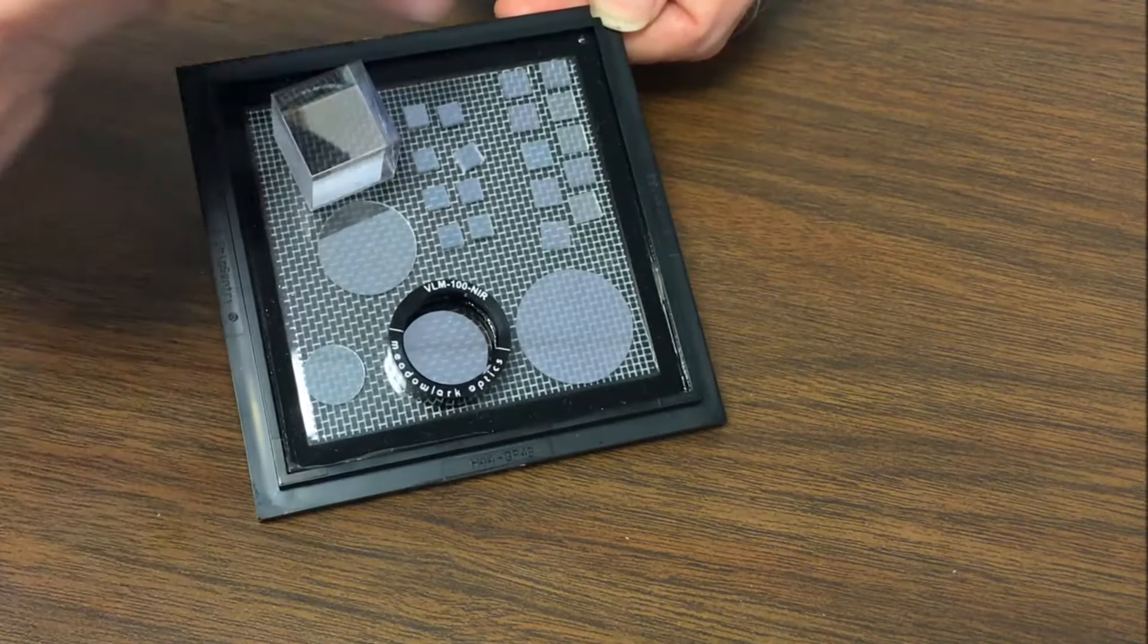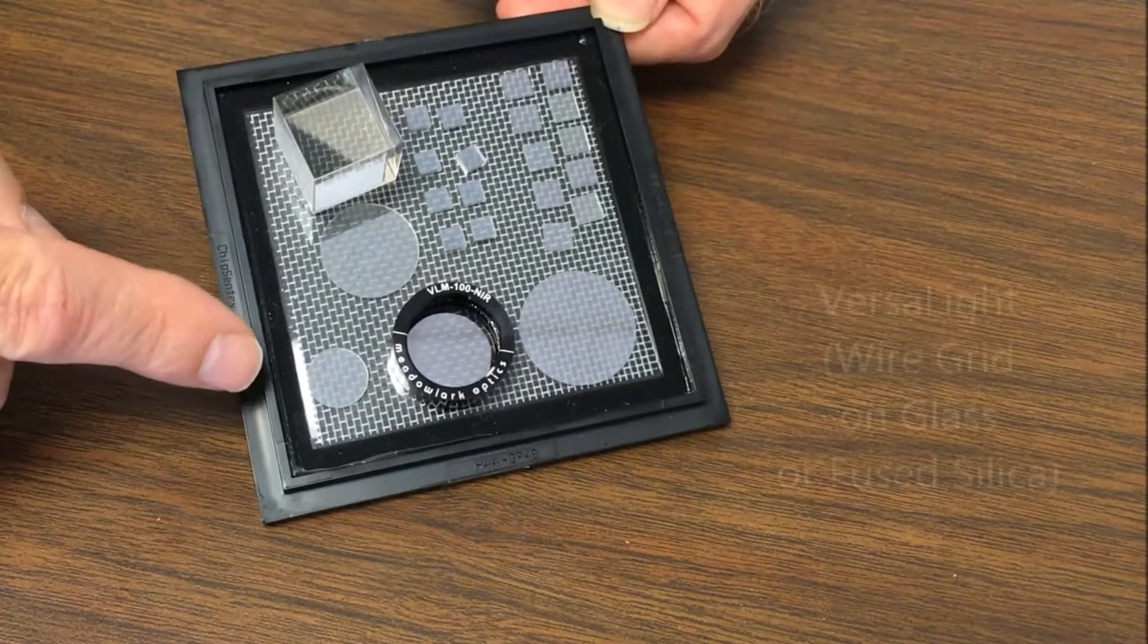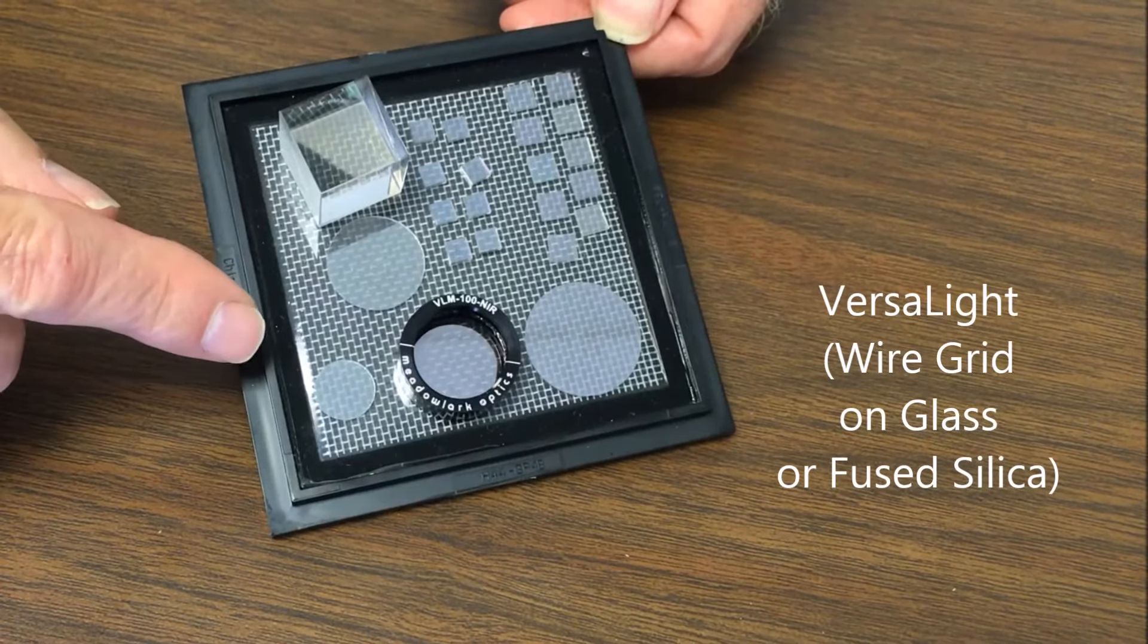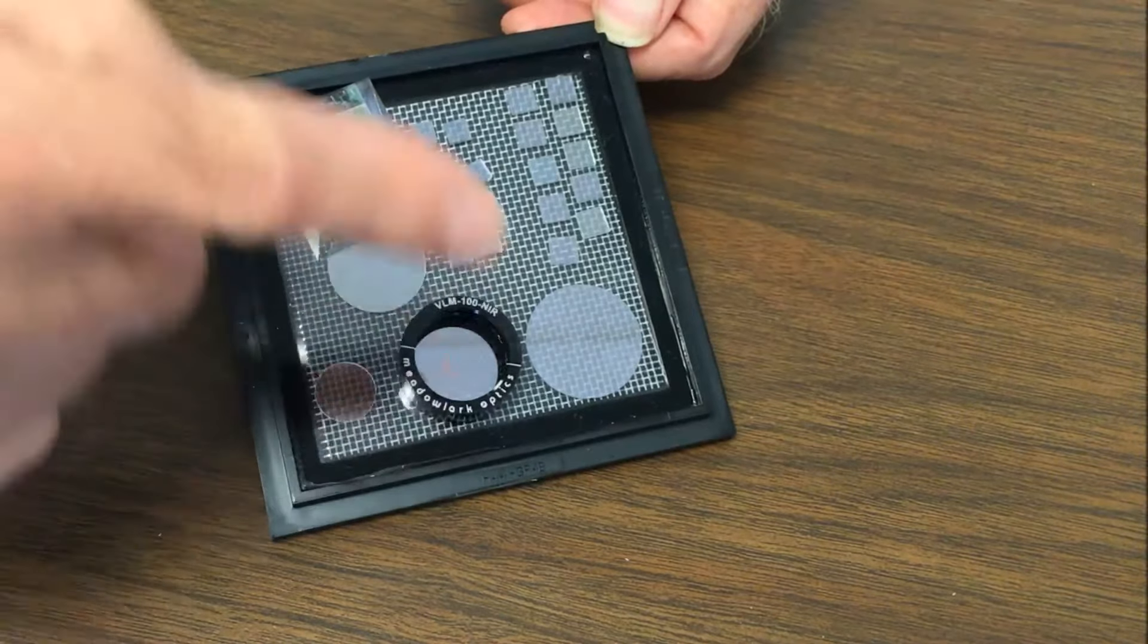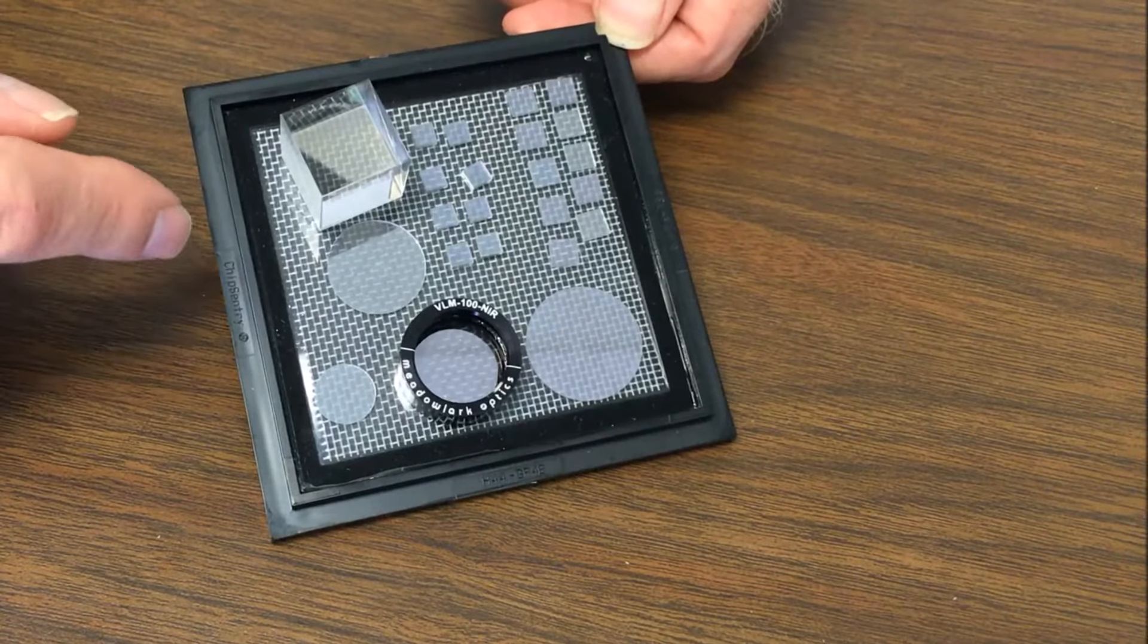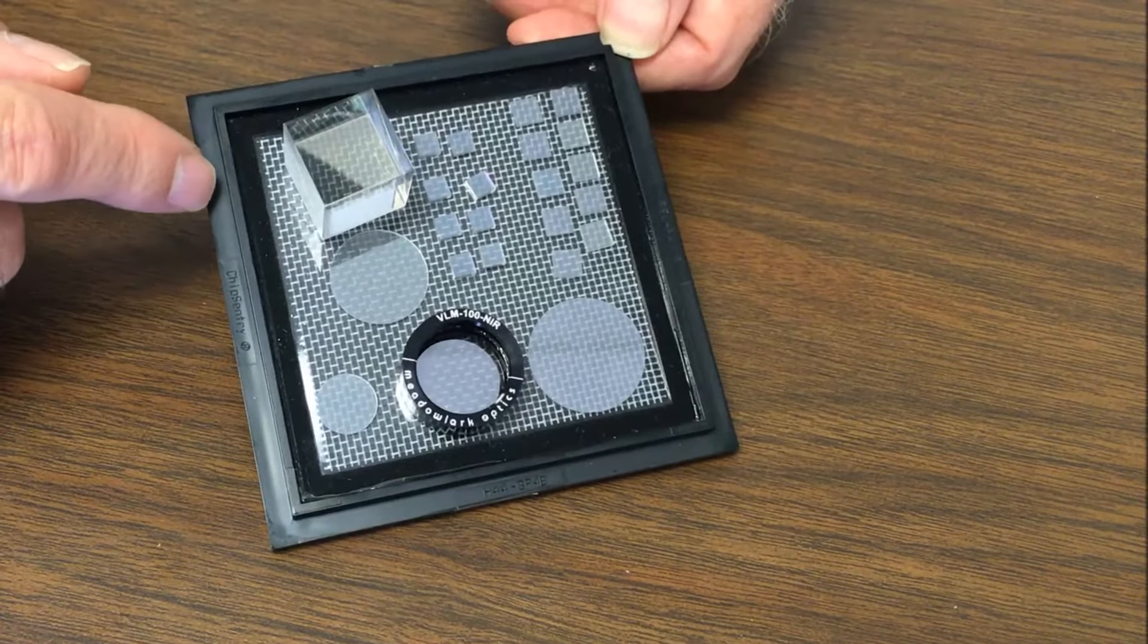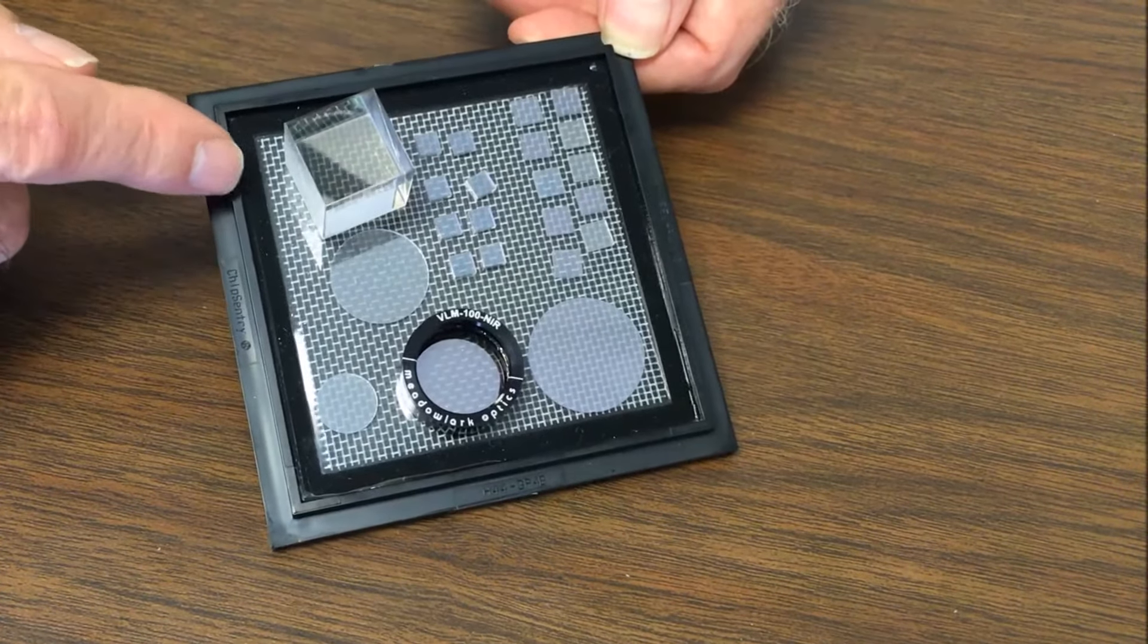These are some examples of our VersaLite linear polarizers, and these are a wire grid on glass or fused silica. They come in many shapes, as you can see, even in a cube. We put them in along the hypotenuse of a beam splitting cube so they can act as beam splitters.